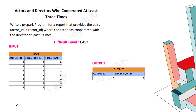So let's start with today's video. We have one case statement where we are having a table containing actor ID and director ID along with the timestamp. We are required to write a PySpark program for a report that provides the pair of actor and director ID where the actor has cooperated with the director at least three times.